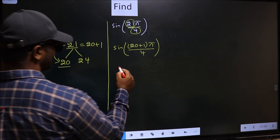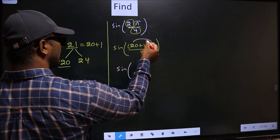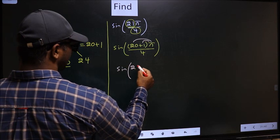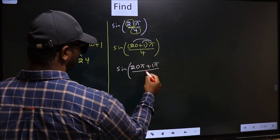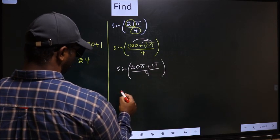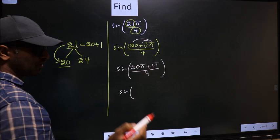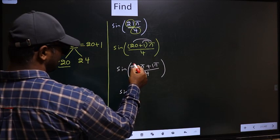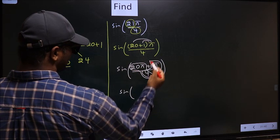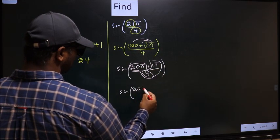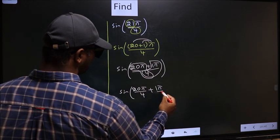Next, sine. Now, you should open up the brackets. You get 20 pi plus 1 pi by 4. Now, sine. You should split the denominator in this way. That is 20 pi by 4 plus 1 pi by 4.